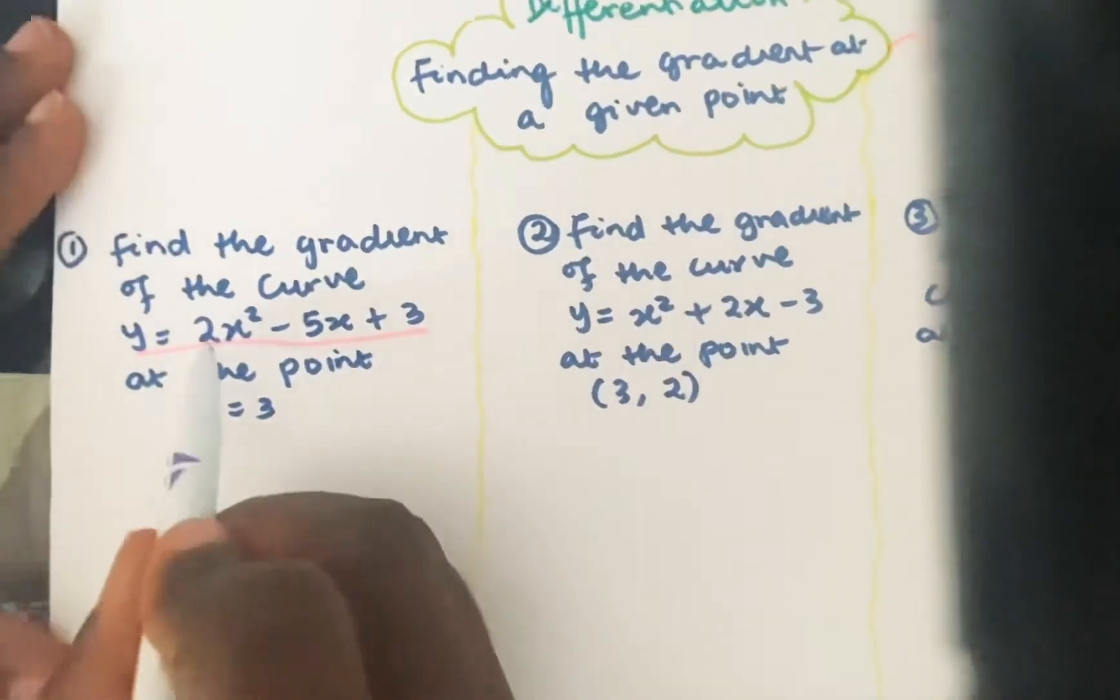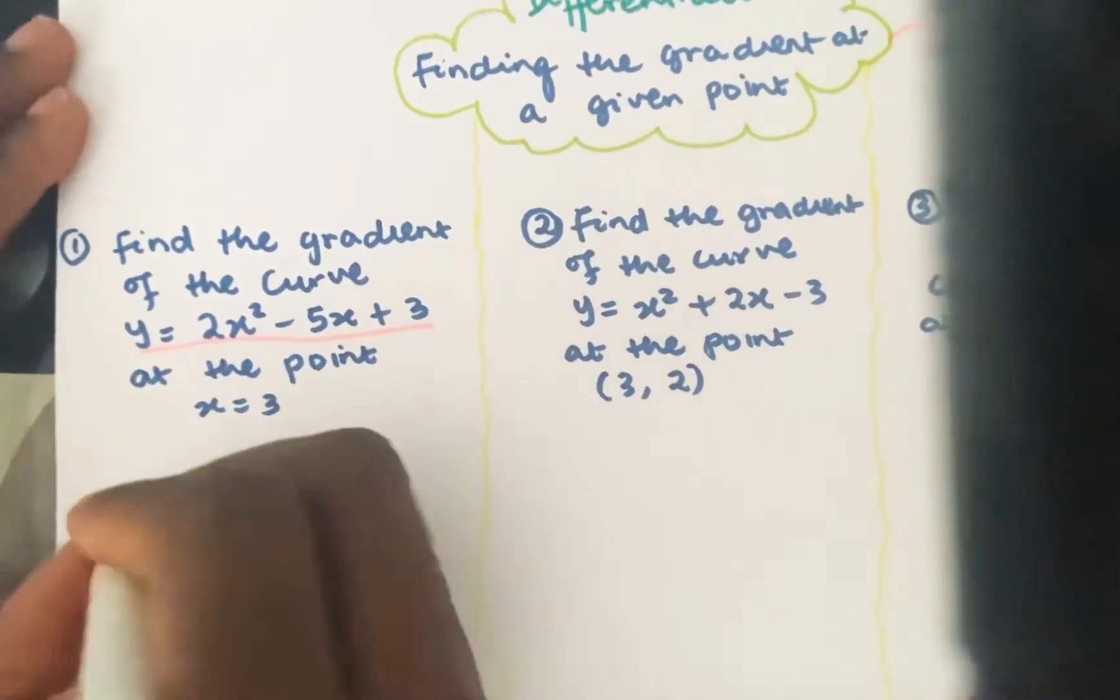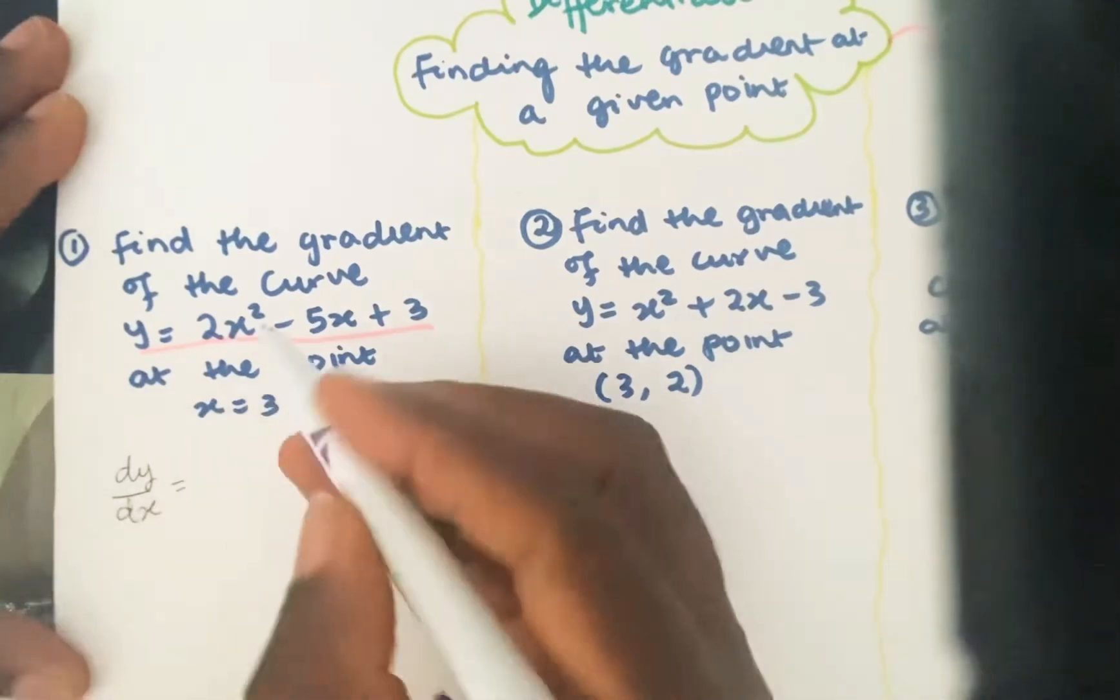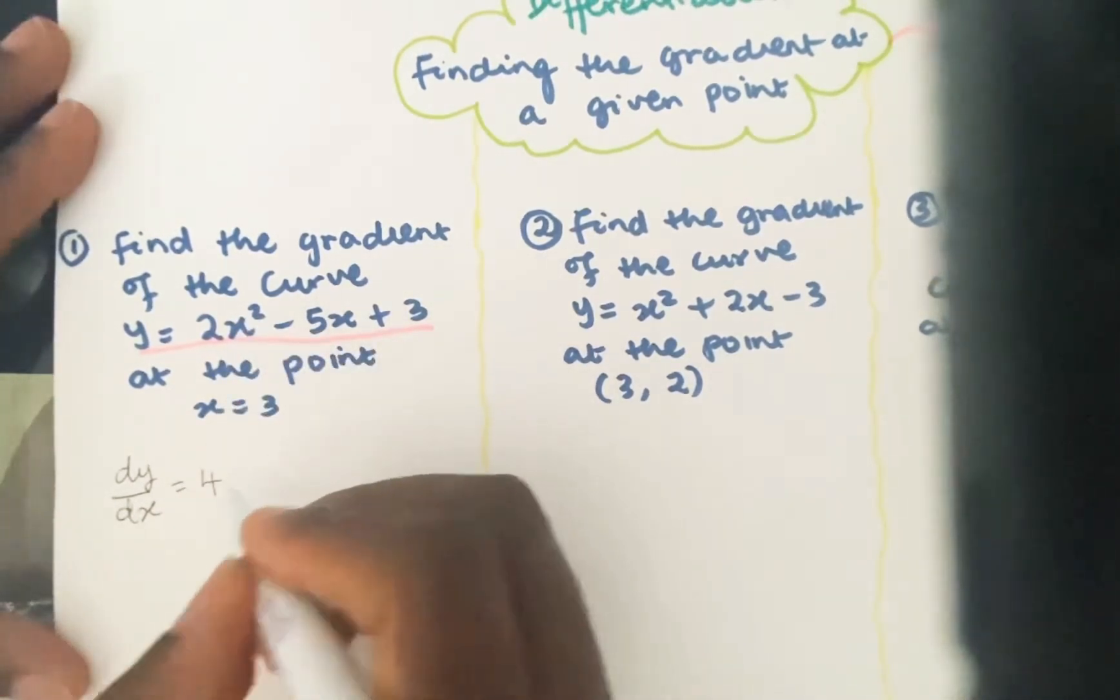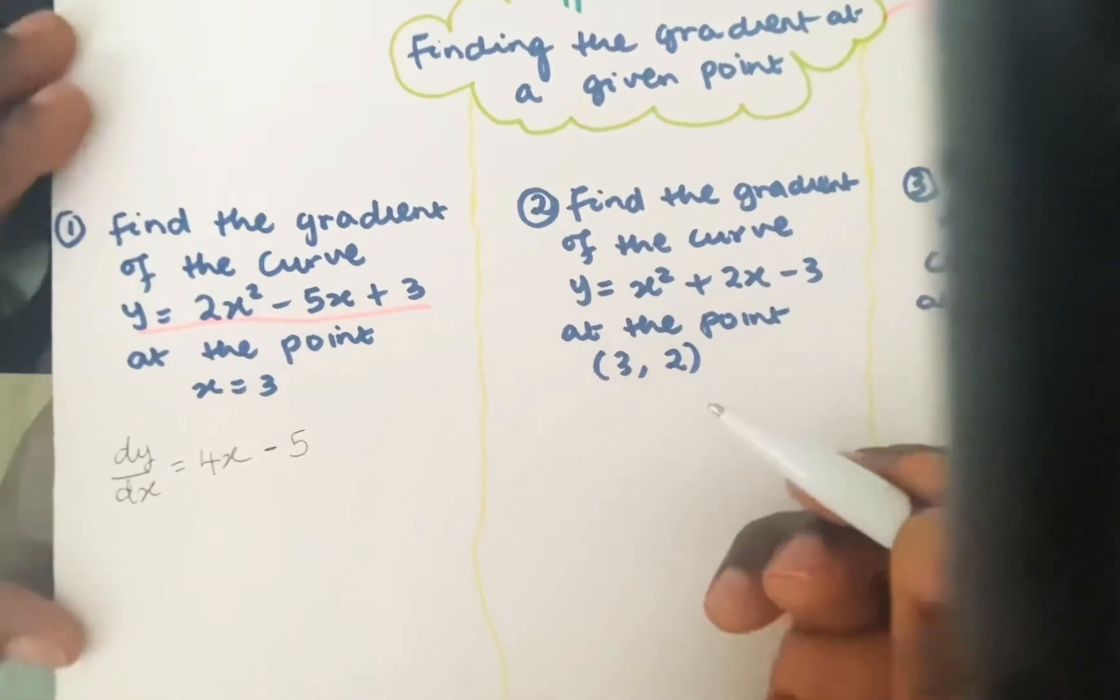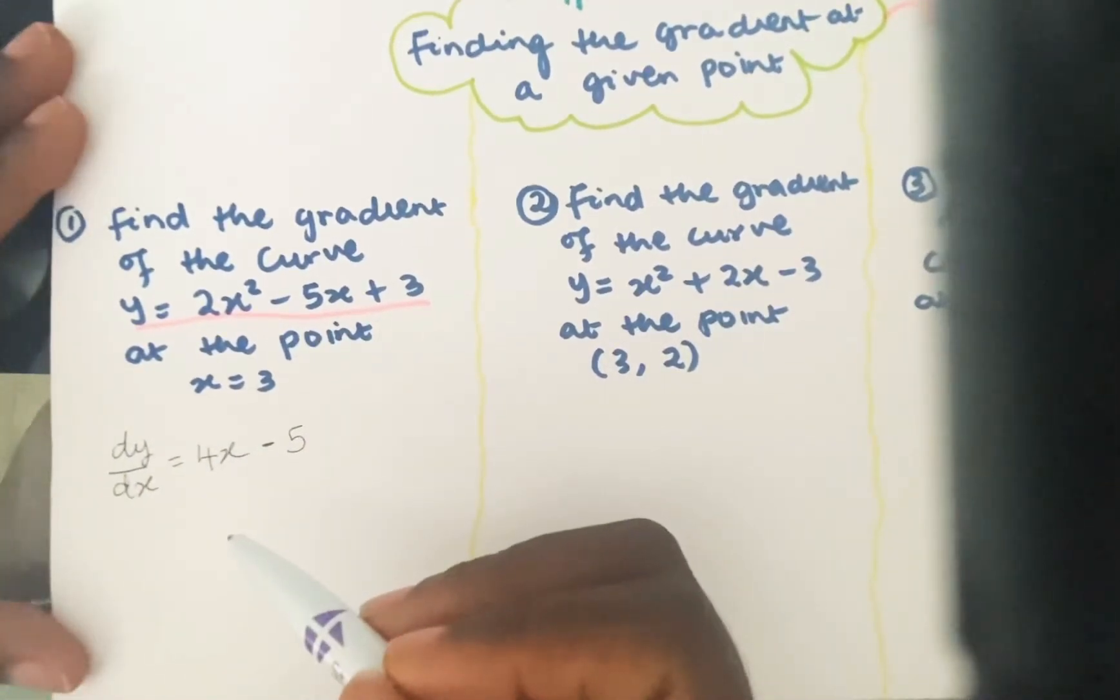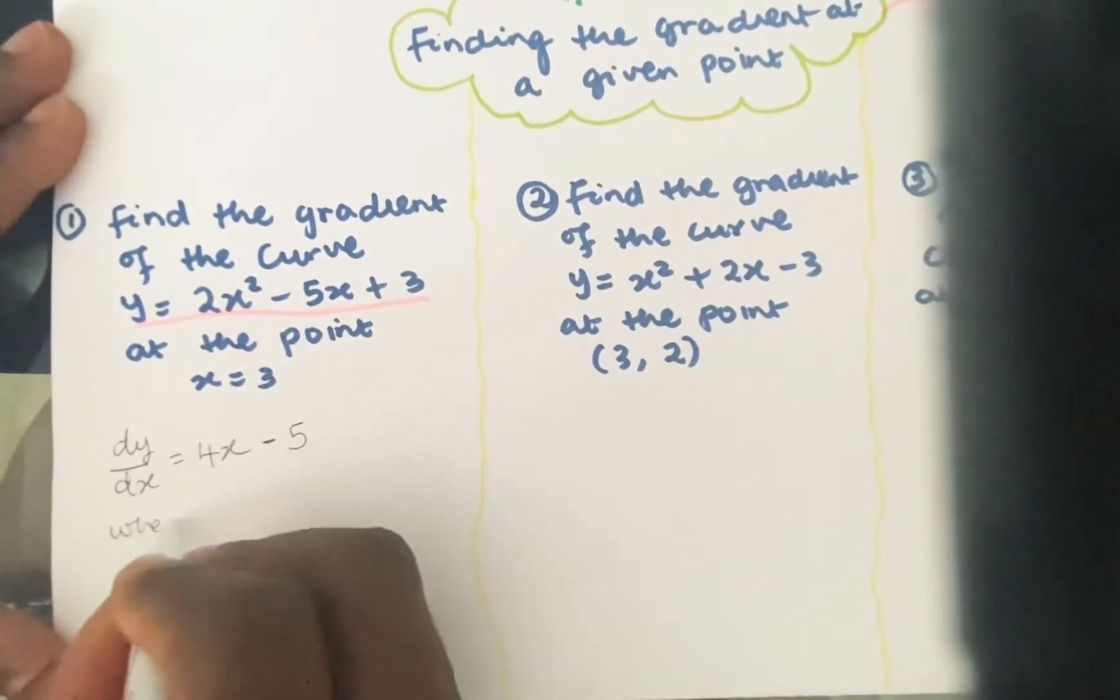If y is equal to 2x squared minus 5x plus 3, then dy by dx would be equal to 2 times 2 is 4. And if we reduce the power by 1, we'll just have x minus. And that comes to just 5. And that is the gradient function. So now we need to substitute when x equals 3.